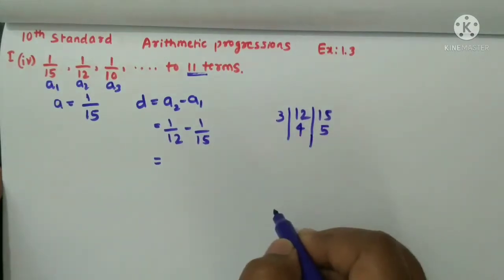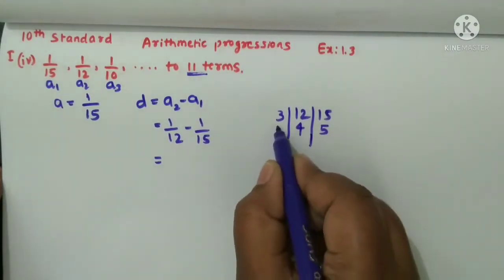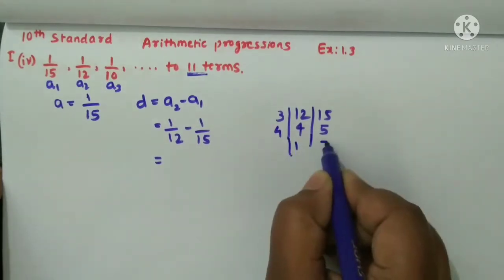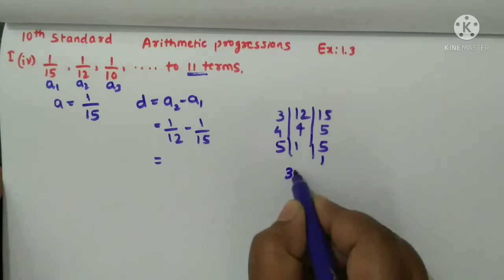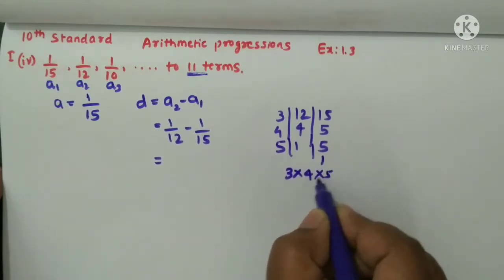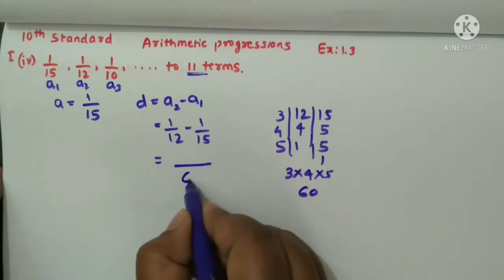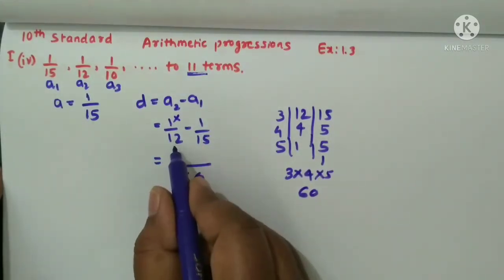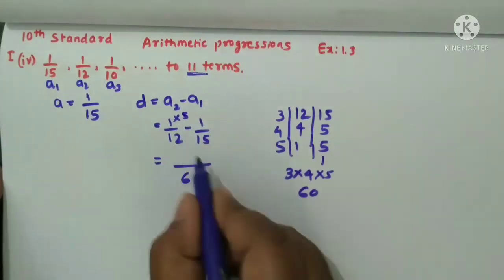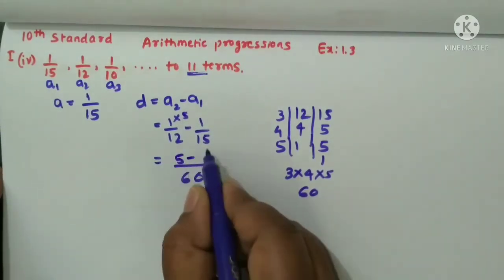So we take 4, 1 is 5 as it is. So LCM is 3 into 4 into 5. 3, 4 is 12, 12, 5 is 60 is LCM. So 60 is LCM means here what I should multiply to get 60 - to 12 I have to multiply 5 to get 60, so you will get answer as 5 minus.